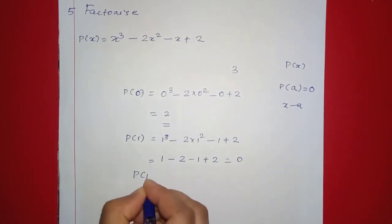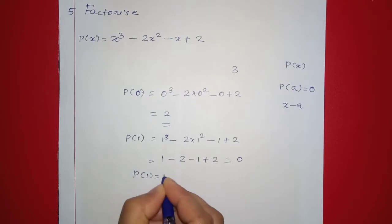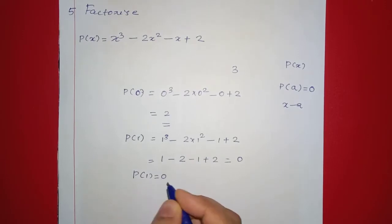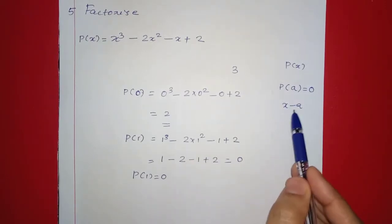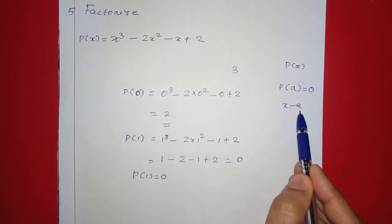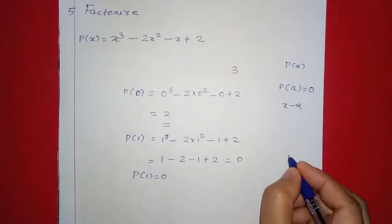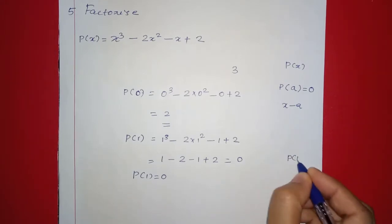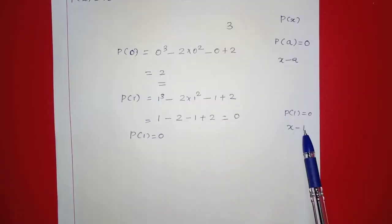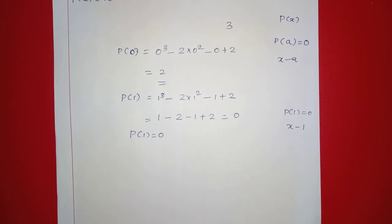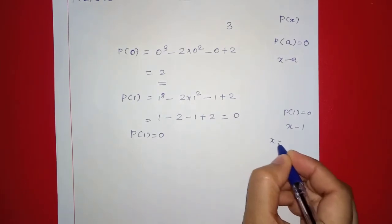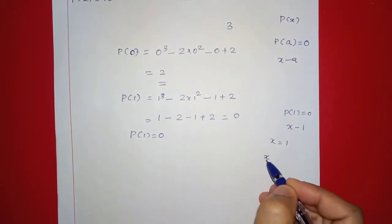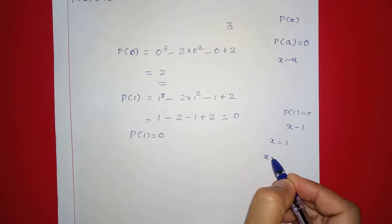So P of 1 equals 0. Now we have found a zero, so x minus 1 is a factor. Since P of 1 equals 0, that means x minus 1 is a factor of P of x.